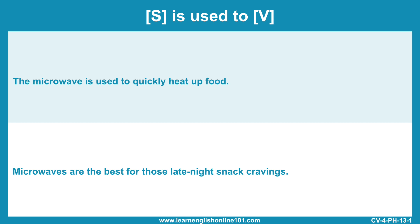The microwave is used to quickly heat up food. Microwaves are the best for those late-night snack cravings. The dishwasher is used to make washing dishes easier. Dishwashers are a game-changer — I need one as soon as possible.